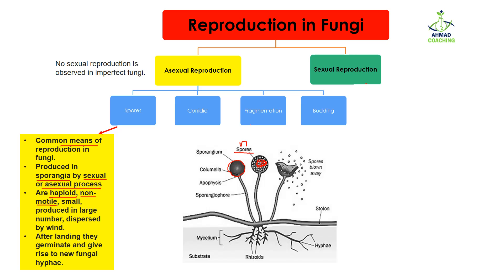Spores are non-motile, meaning they cannot move by themselves. They are small in size and produced in large numbers — you can see that inside the sporangium there are so many spores. Moreover, they are dispersed by the help of wind. When the sporangium bursts, all the spores go out into the air and are carried from one place to another because they are very light. After landing on a suitable place, they germinate and grow.